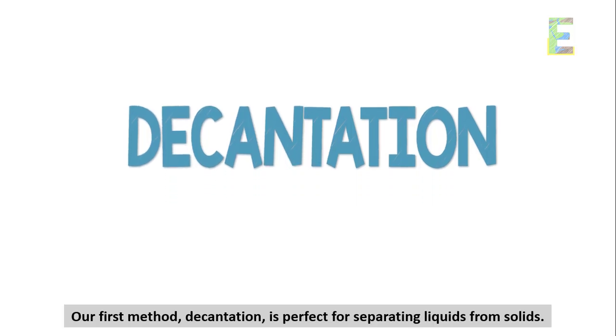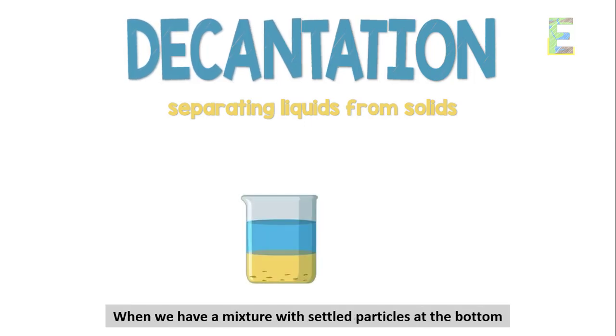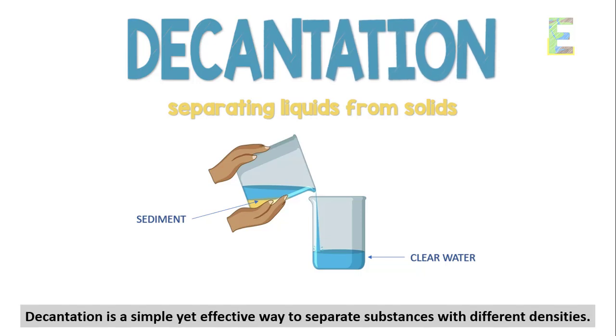Decantation, our first method, is perfect for separating liquids from solids. When we have a mixture with settled particles at the bottom, carefully pouring off the liquid without disturbing the sediment allows us to obtain a clear liquid layer. Decantation is a simple yet effective way to separate substances with different densities.